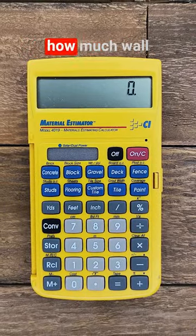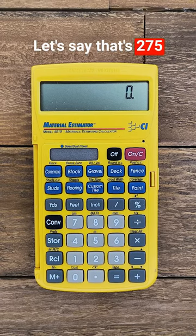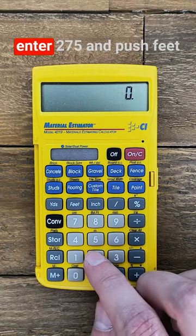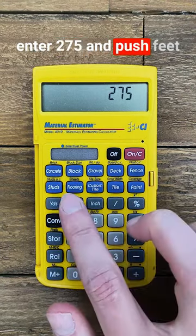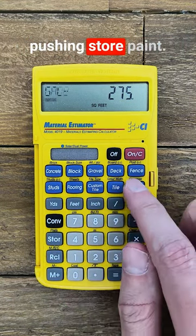First you can store how much wall area one gallon of paint will cover. Let's say that's 275 square feet, so I can enter 275 and push feet twice for square feet. Then store that by pushing store paint.